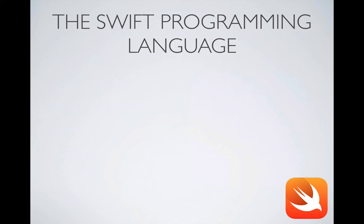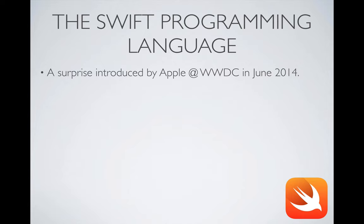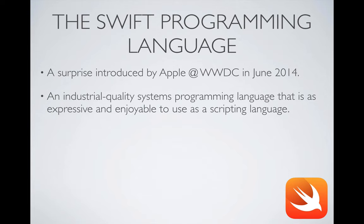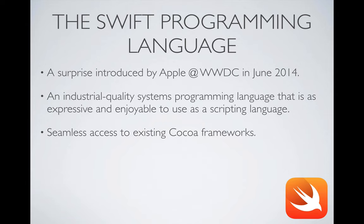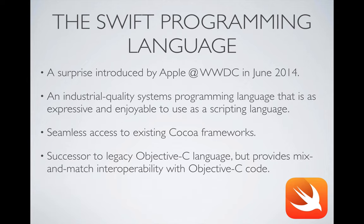Apple surprised the iOS developer community back in June 2014 when they announced the Swift language at the Worldwide Developer Conference, Apple's annual developer conference. Swift is an industrial quality systems programming language, and it's actually very expressive, very much like some of the higher level scripting languages. It has all the fun and joy that you get in languages like Ruby and Python, and yet it compiles into very efficient code. It offers seamless access to the existing Cocoa frameworks that make up the iOS platform.